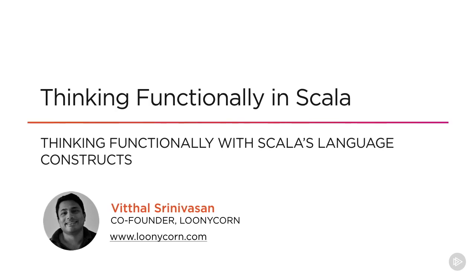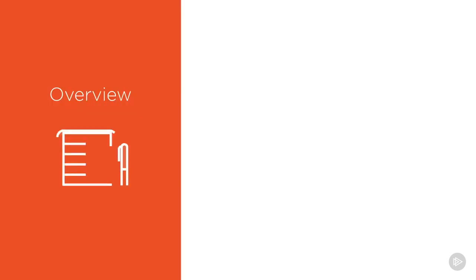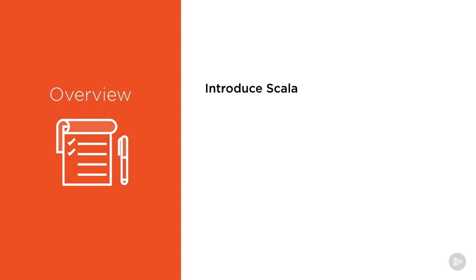Hello and welcome to this course on thinking functionally in Scala. Scala is a high performance general purpose programming language which supports both object-oriented and functional programming and which runs atop the JVM platform — that's the Java virtual machine. We'll begin this module by introducing Scala, and we'll do so particularly for data professionals.